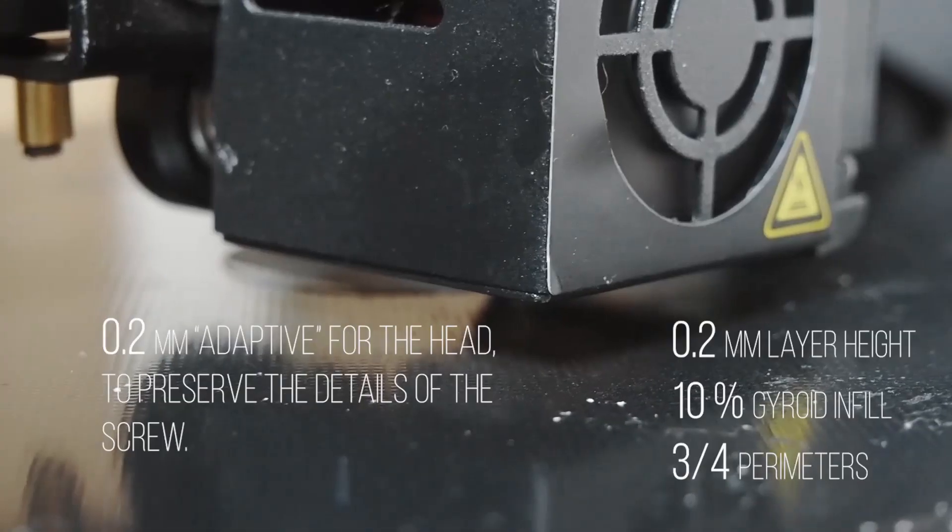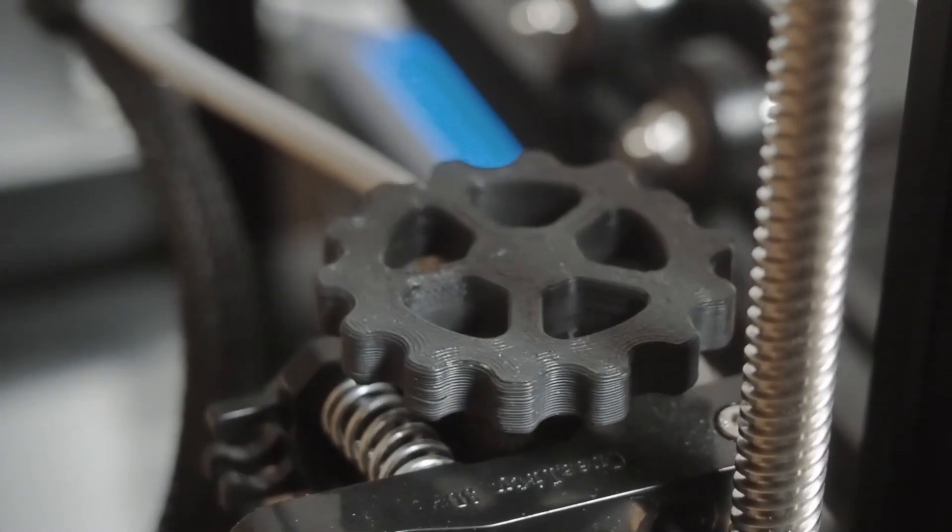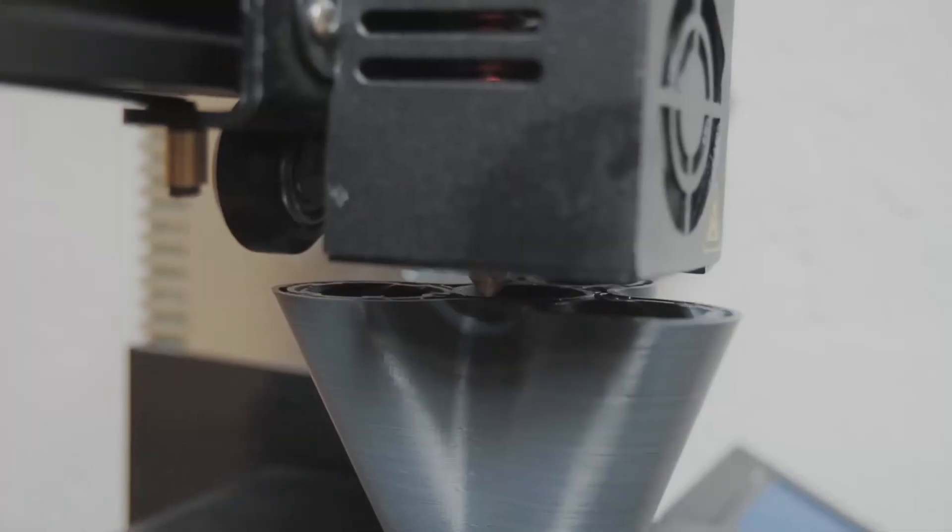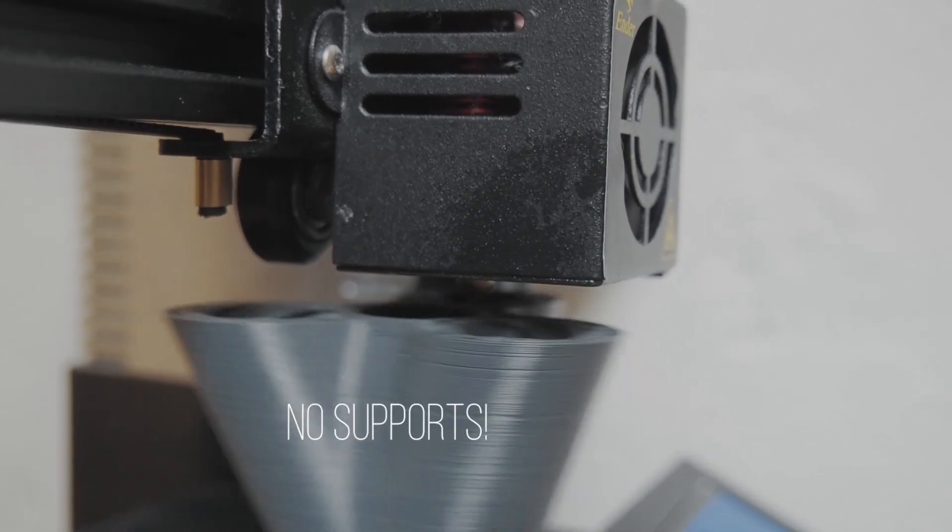I recommend a 0.2 mm layer height and 10% gyroid infill. Even if you have a good printer, you'd better use a small raft for the head, which should be printed upside down. Make sure to disable supports.